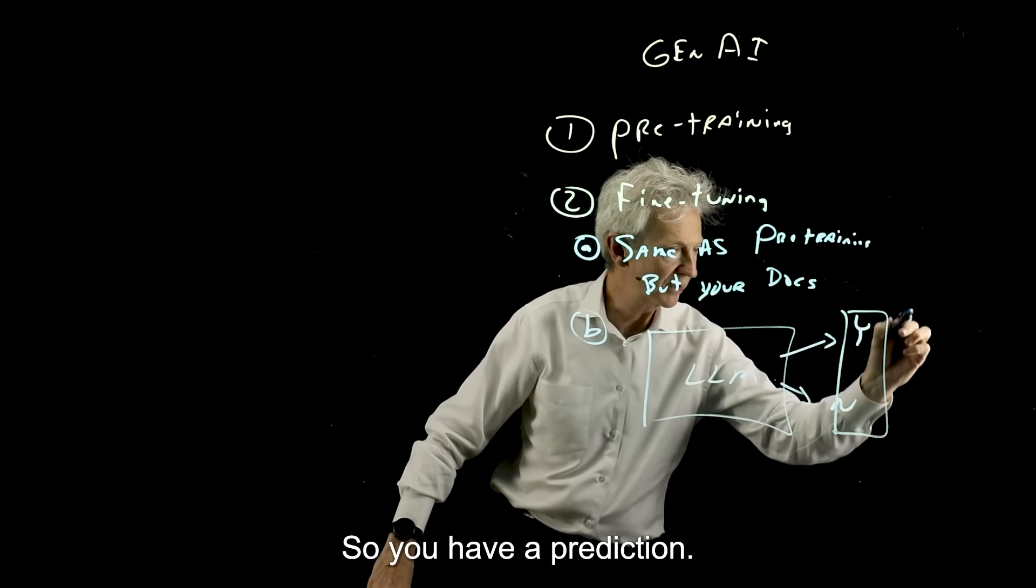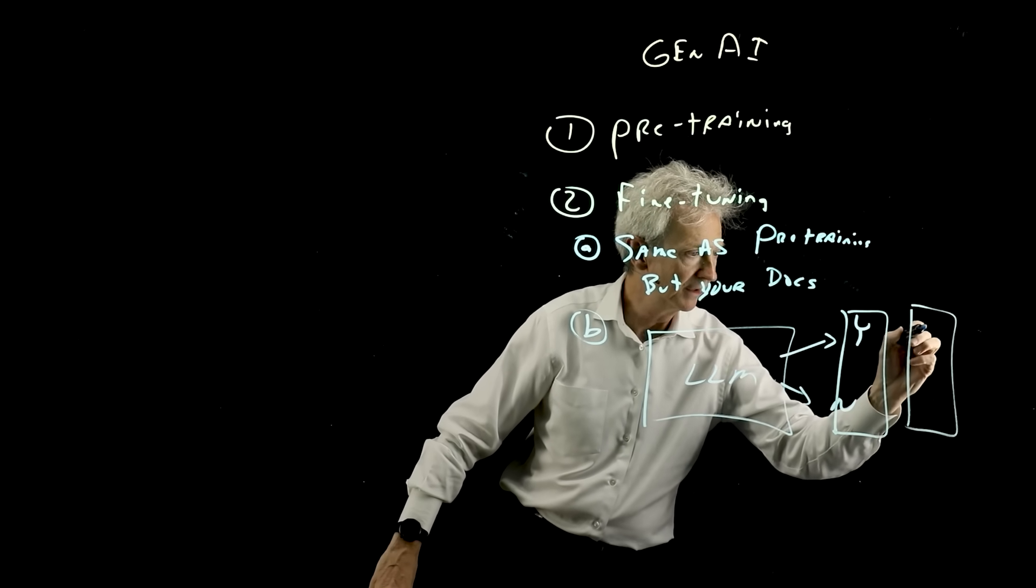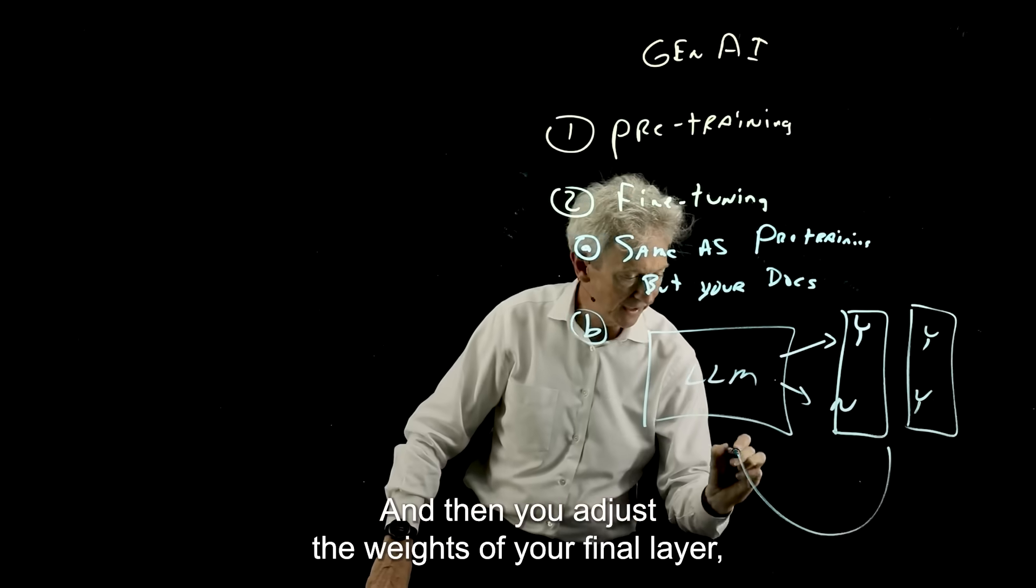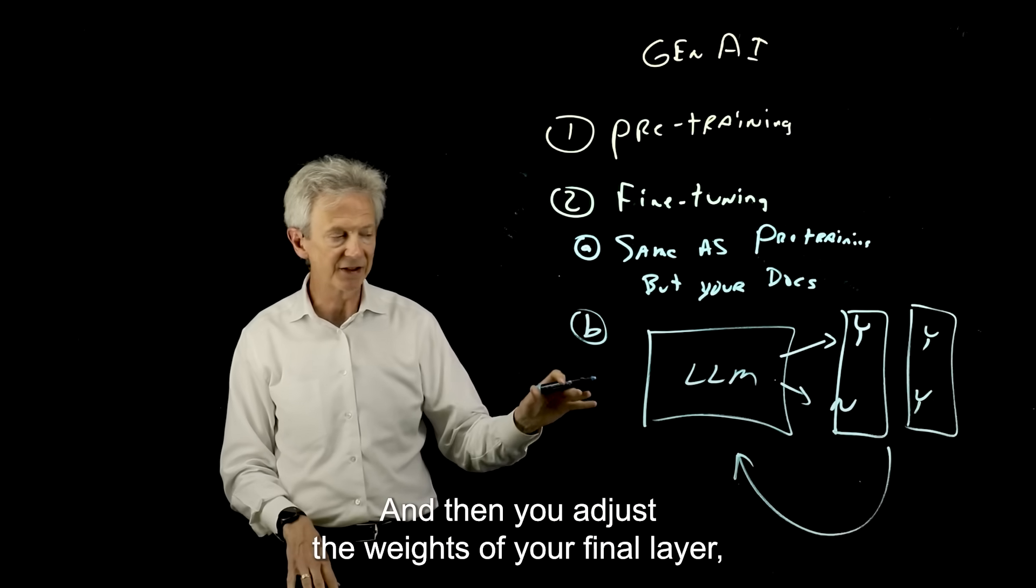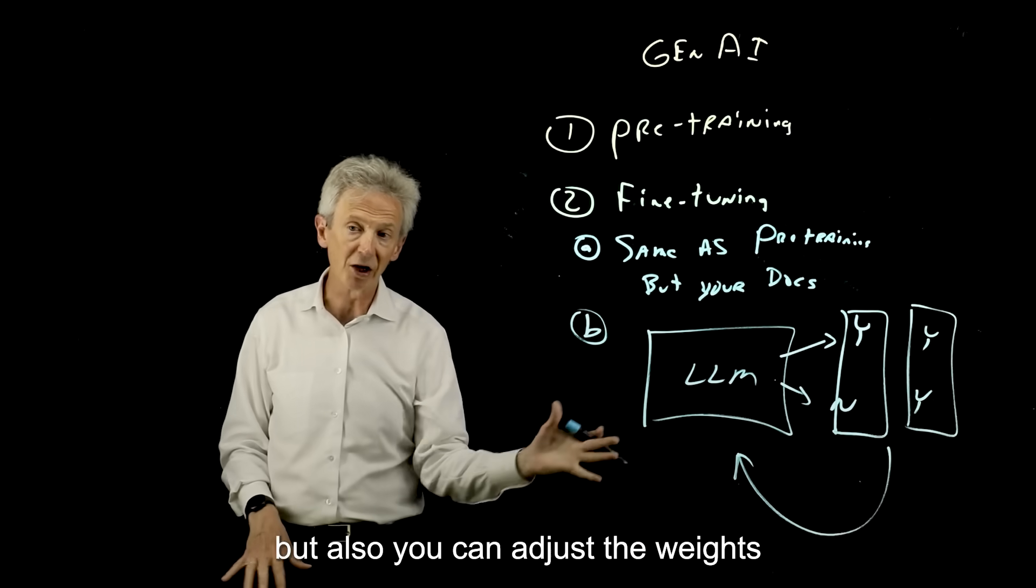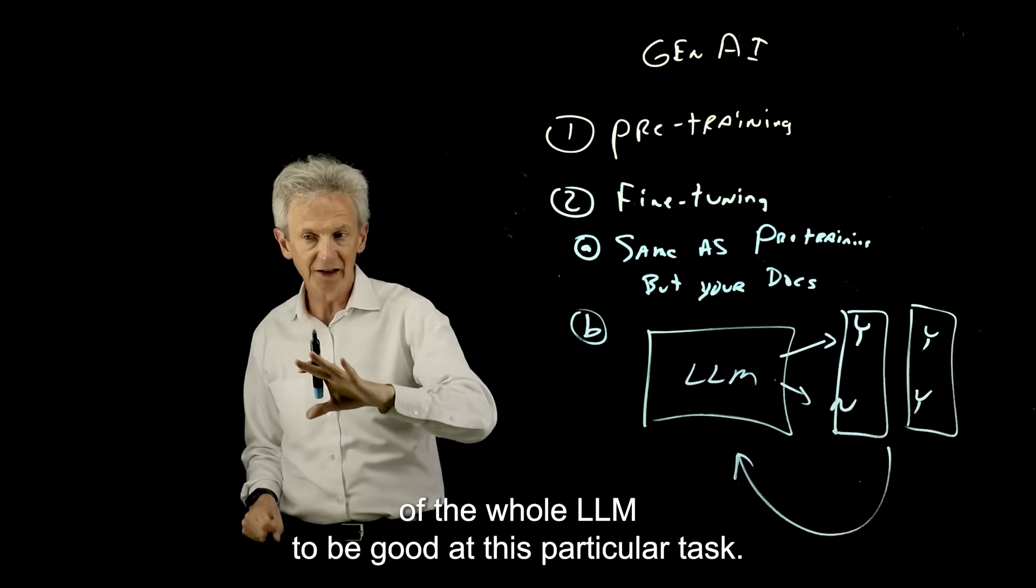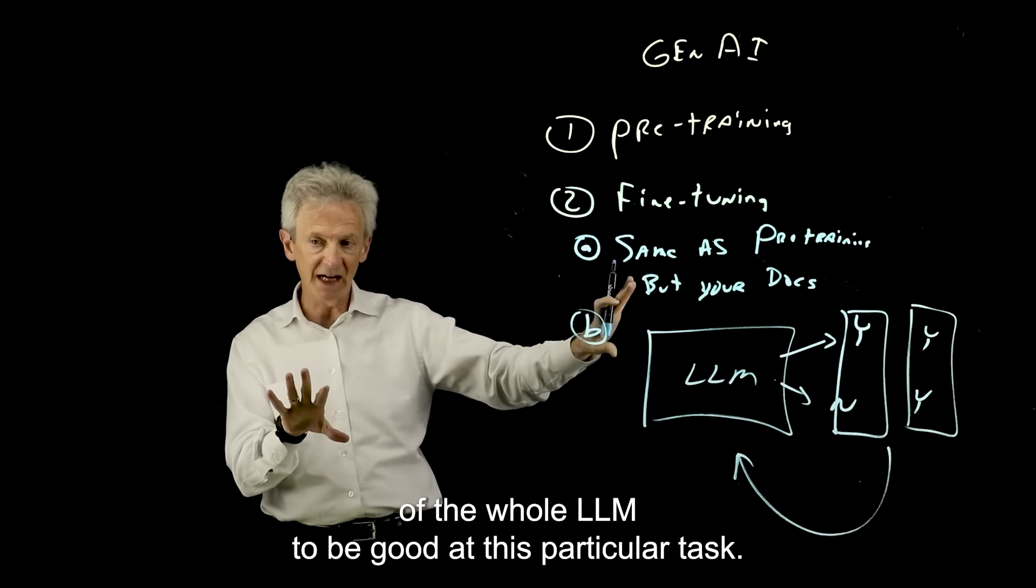So you have a prediction, you have your label—yes and yes, let's say. And then you adjust the weights of your final layer, but also you can adjust the weights of the whole LLM to be good at this particular task.